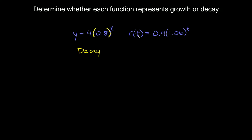For r(t) = 0.4 times 1.06 raised to the t, just look at what's inside the parentheses: 1.06 is bigger than one, so this is a growth function.